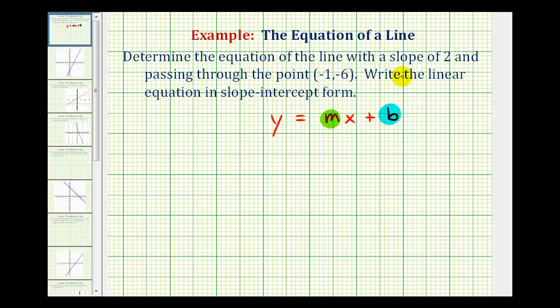And notice in the given information, we're told the slope is two. So let's go ahead and rewrite this, substituting two for m. So we know y must equal two times x plus b.